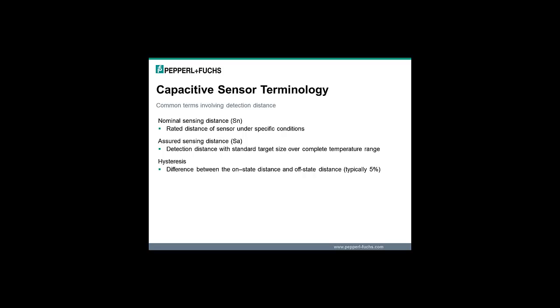Third is the hysteresis of the sensor, which defines the difference in distance between the on distance and the off distance.